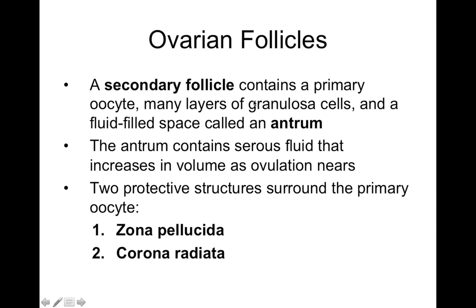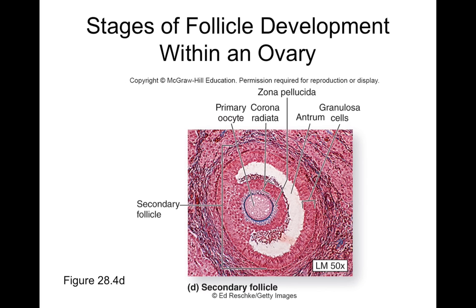The secondary follicle is a little larger and contains a primary oocyte with many layers of granulosa cells and a fluid-filled space called an antrum. The antrum suspends the primary oocyte. Around the oocyte are two protective layers: zona pellucida and corona radiata. What allowed the primary follicle to develop into the secondary follicle was partly the estrogen it released, which stimulated the existing follicle to grow larger — not new follicles, but the existing primary follicle stimulating itself.